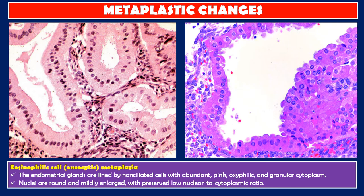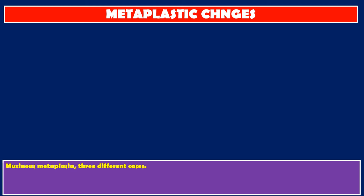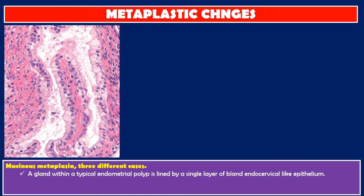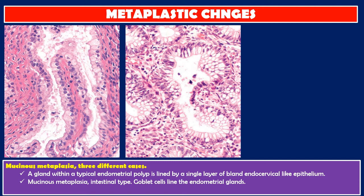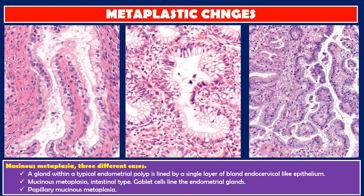Mucinous metaplasia: three different cases are presented. A gland within a typical endometrial polyp is lined by a single layer of bland endocervical-like epithelium. Mucinous metaplasia, intestinal type: goblet cells line the endometrial glands. Papillary mucinous metaplasia is also shown.